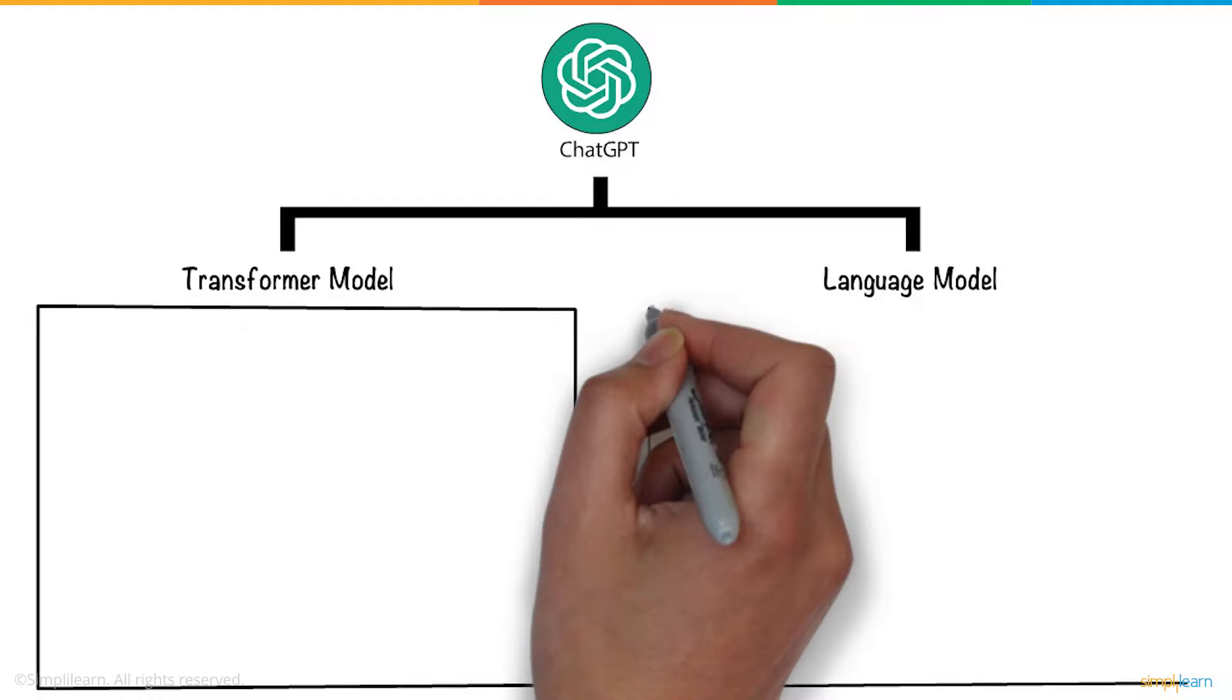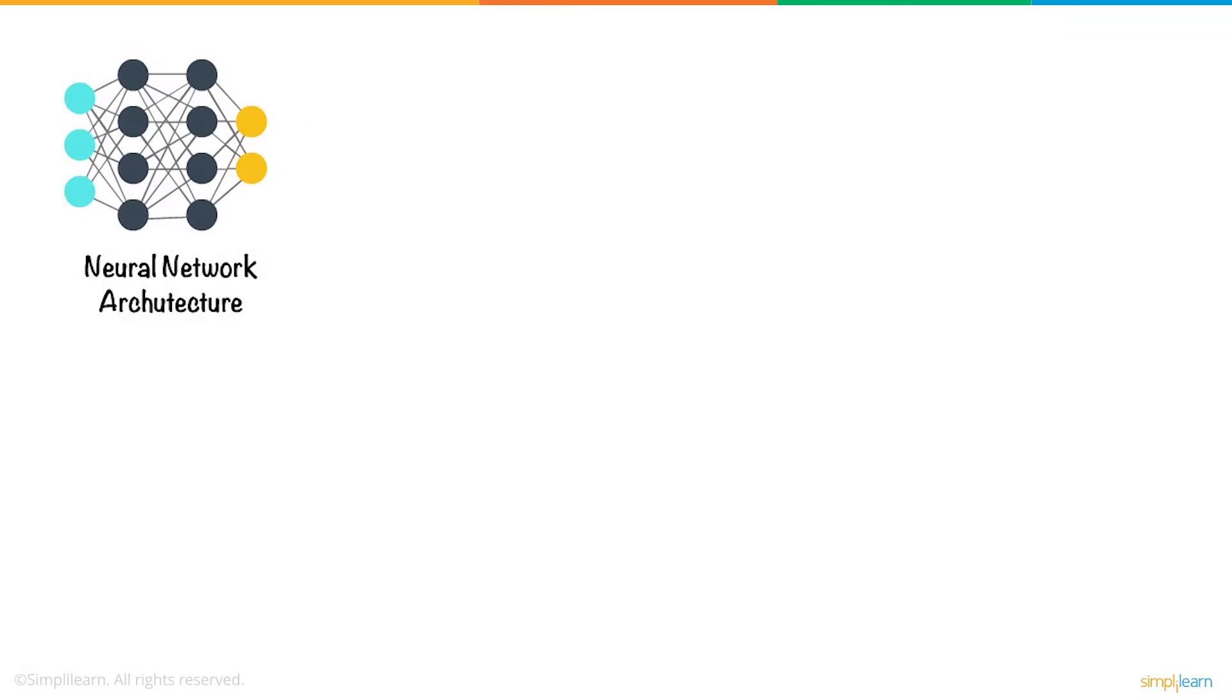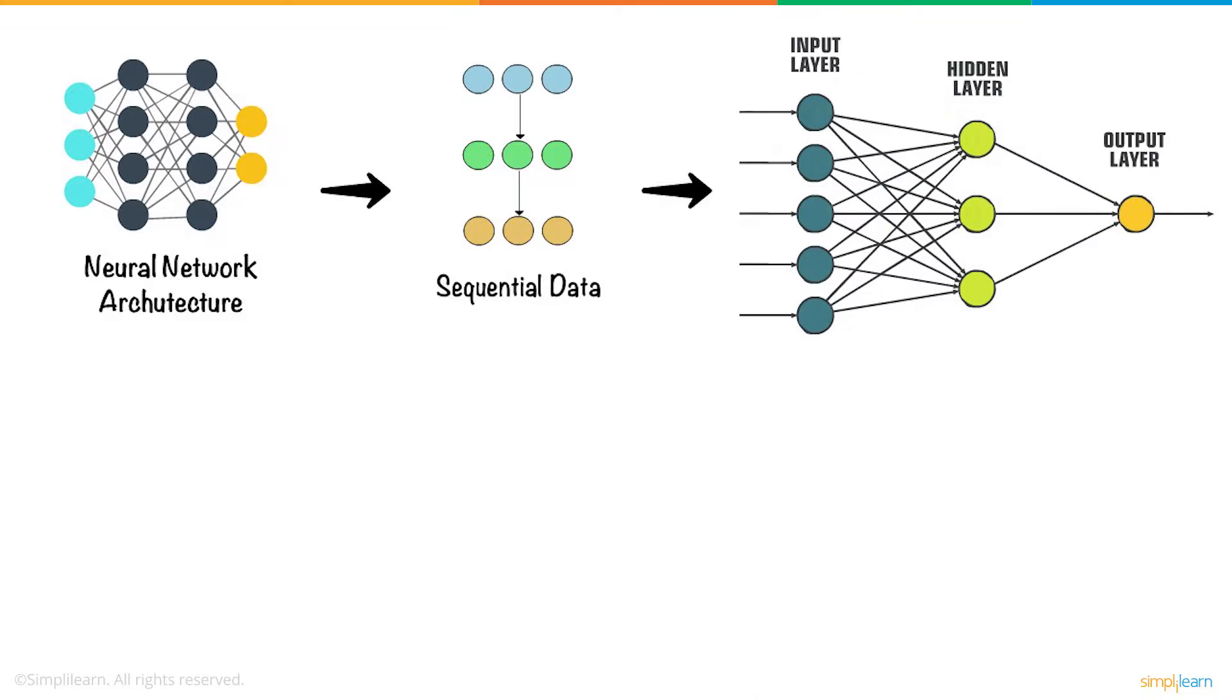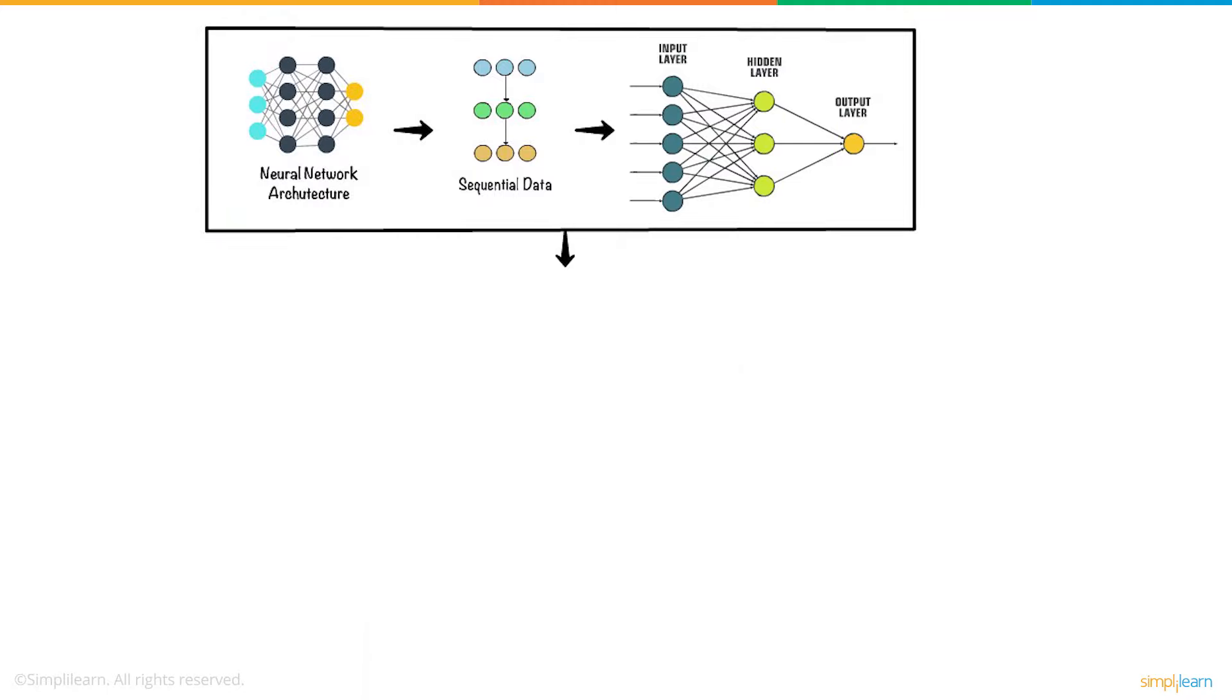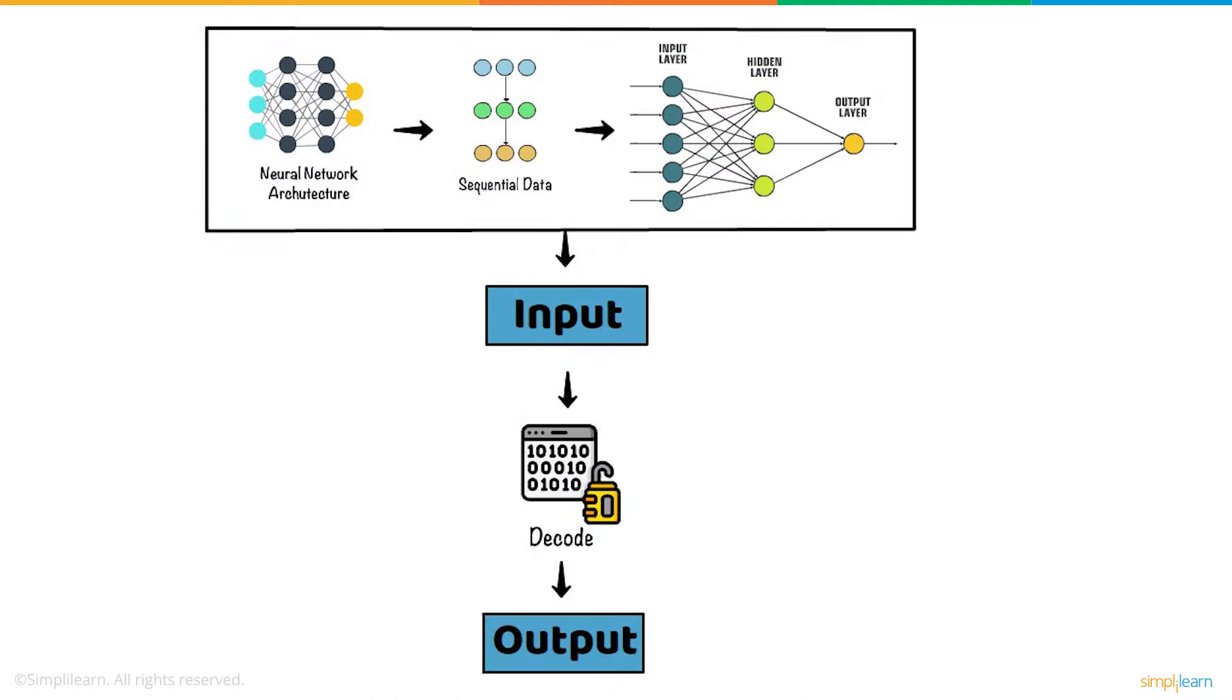The most important components of ChatGPT are the Transformer Model and Language Model. Coming to the Transformer Model, it is a neural network architecture designed to process sequential data. It consists of multiple layers of self-attention and a feed-forward network. After the Transformer Model has processed the input, a decoder generates the output. The decoder uses the context provided by the encoder to generate the response.